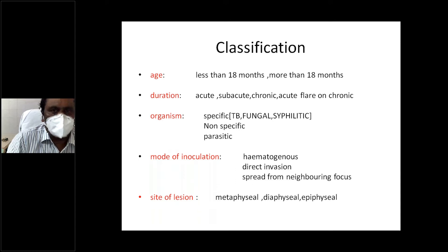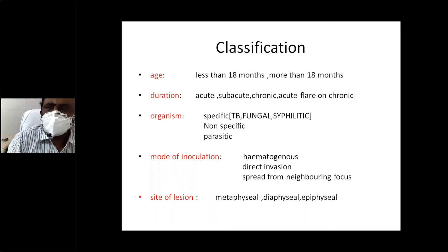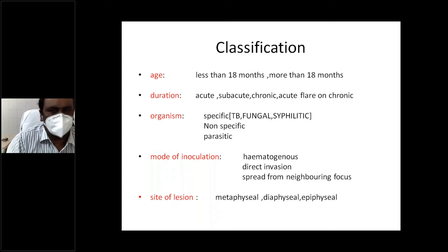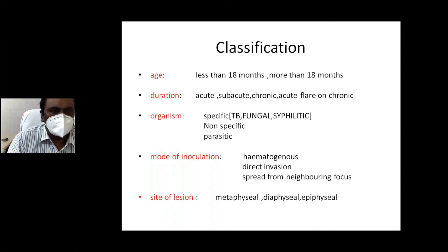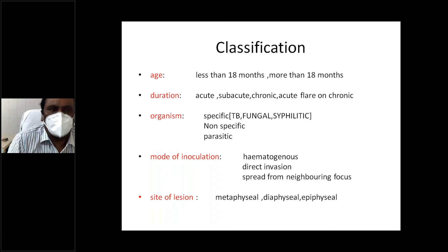According to organisms, osteomyelitis is specific, non-specific, and parasitic. Specific means the organism requires a different culture media and special staining techniques — for example, fungal osteomyelitis and tuberculous osteomyelitis. Non-specific means routine organisms like gram-positive and gram-negative infections using standard culture and staining. Parasitic infection most commonly involves Echinococcus (taenia).